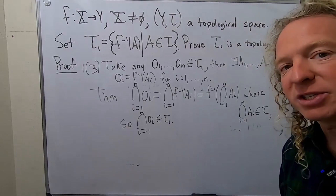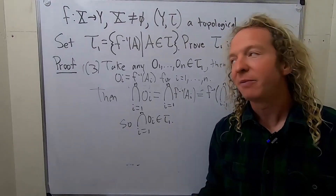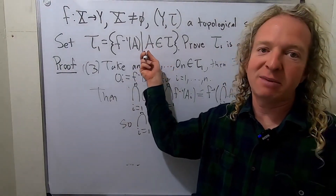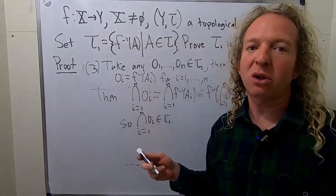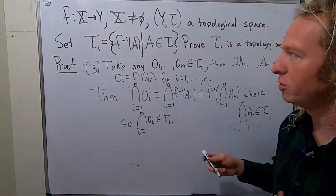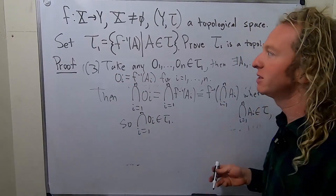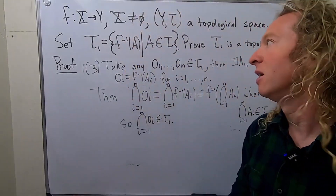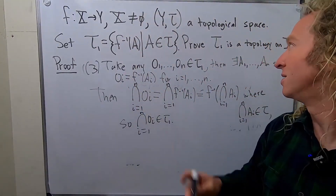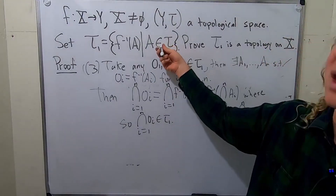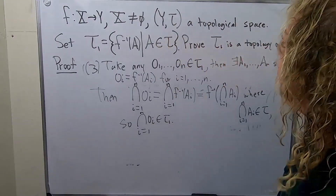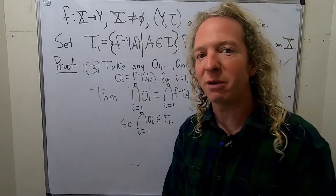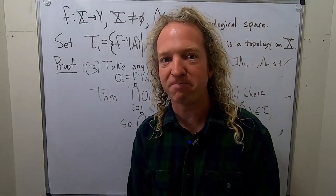That completes the proof. We showed that tau 1 contains X and the empty set, it's closed under arbitrary unions of its elements, and closed under finite intersections of its elements. Therefore, tau 1 is a topology on capital X. I hope this video has been helpful. Take care.